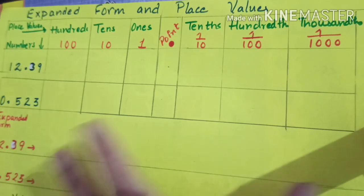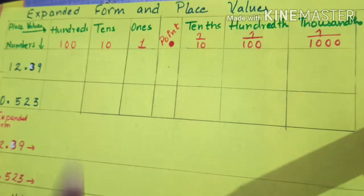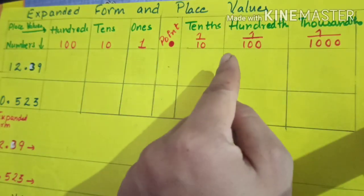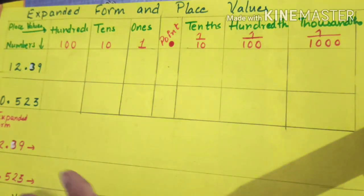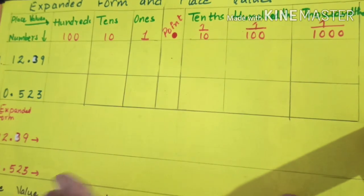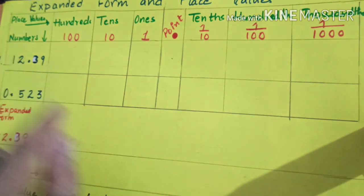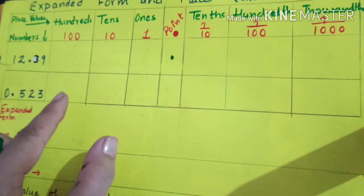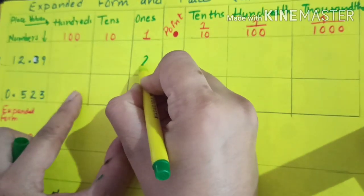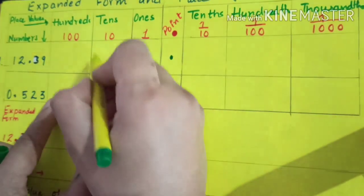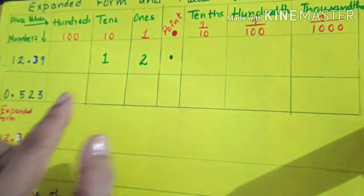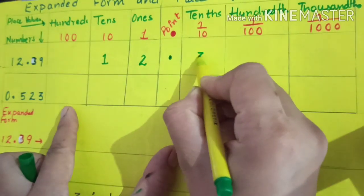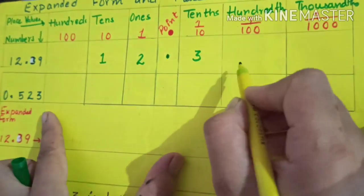For this I have made a place value chart. You already know about the place value chart: ones, tens, hundreds, then after the decimal point, tenths, hundredths, and thousandths. For 12.39, before the decimal point, two is at the ones position, one is at the tens position, and after the decimal, three is at the tenths position and nine is at the hundredths position.